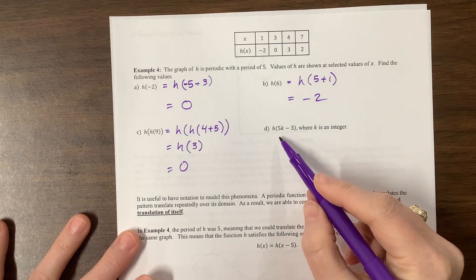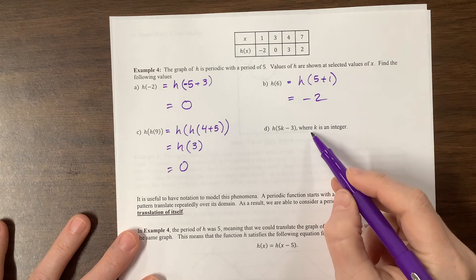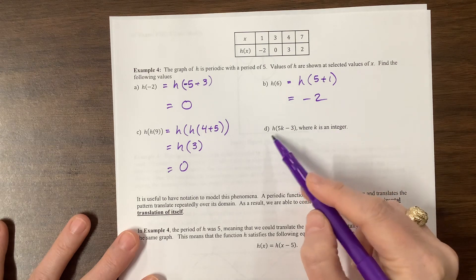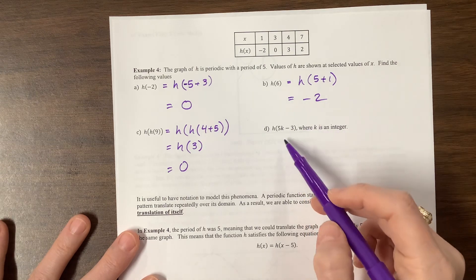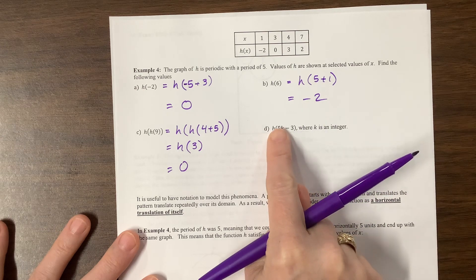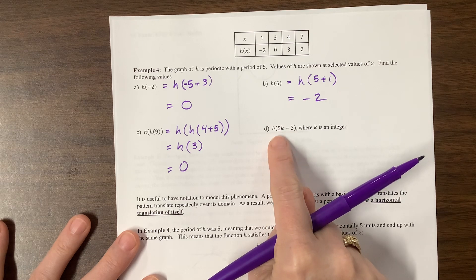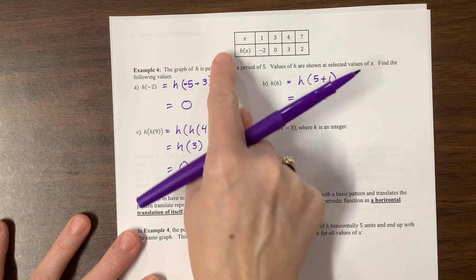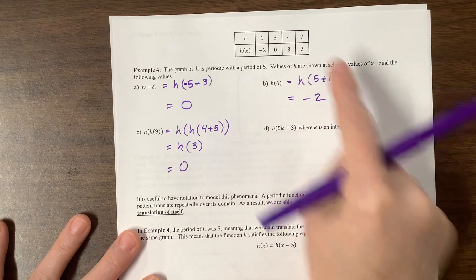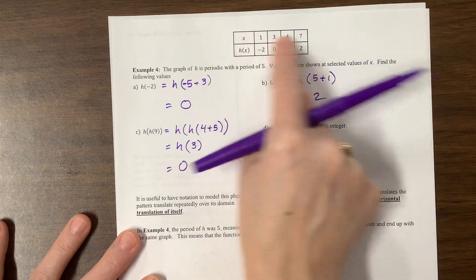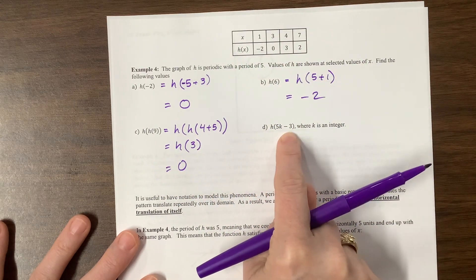On this one, they want to know where K is an integer. What is H of 5K minus 3? Well, if we just plugged in 0 for K, H of 5K minus 3 is going to be the same thing that happens at H of negative 3. But we don't know anything about negative 3. So we're going to have to figure out which of these relates back to that.